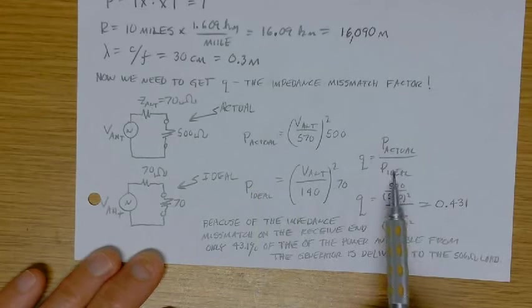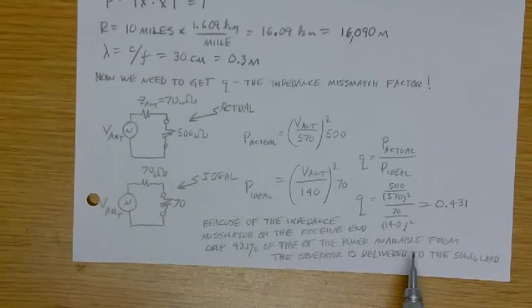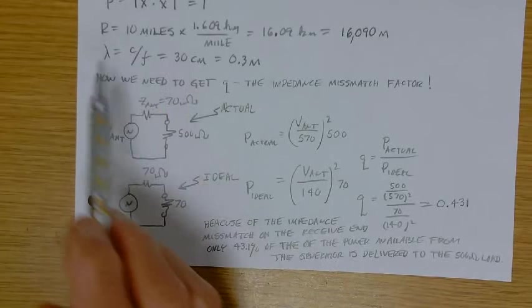Okay. So now we need to work the receive side. Recall what I said earlier. So V antenna in series with Z antenna, that models the receive antenna. This is the open circuit voltage of the receive antenna. This is the internal impedance of the receive antenna. It's connected to 500 ohms. So this is the actual scenario. This is the ideal case. This is the case where maximum power is delivered to the load. And so this factor Q, impedance mismatch factor, is going to be the ratio of the power delivered in the actual case to the 500 ohm divided by the power delivered to the 70 ohm.